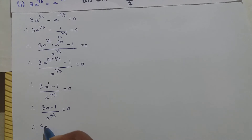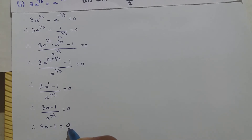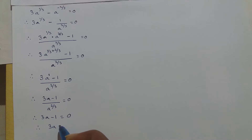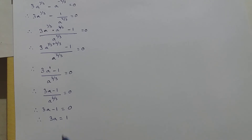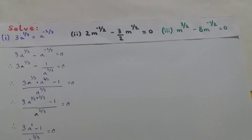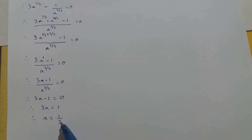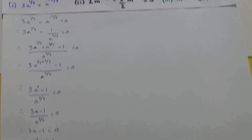So it becomes 3a minus 1 equals 0. Therefore 3a equals 1, and so a equals 1/3. The value of a is 1/3. When I solve this given equation the value of a that I get is 1/3. This is the answer for question number 1.